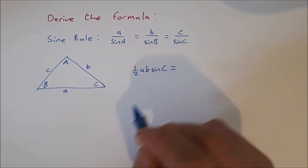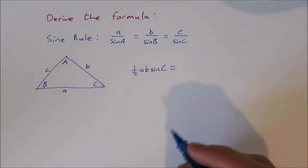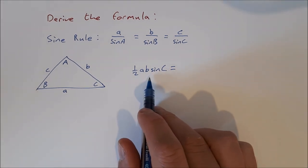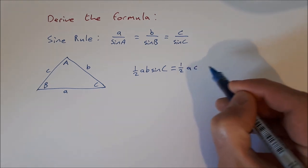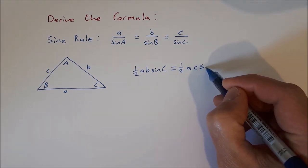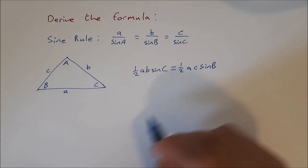And we can also say that another way of doing that, half ab sine C, would be half ac sine B. Okay, so area is equal to area.